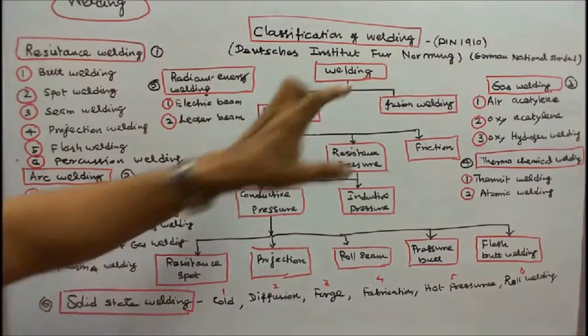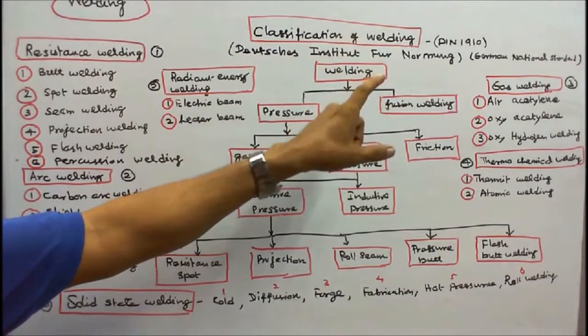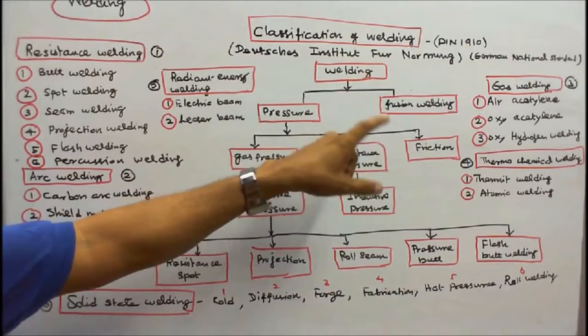There are three types of gas welding: one is air acetylene welding, the second is oxy acetylene welding, the third is oxy hydrogen welding.